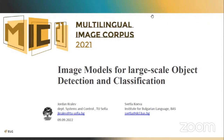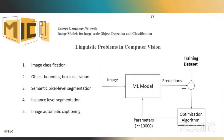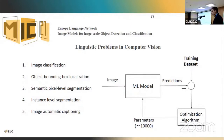Our work is on image models for large-scale object detection and classification. We are solving the problem for computer vision of localizing objects in the image, and we also implement classification and segmentation of the localized objects. This fits the classic structure of machine learning tasks.